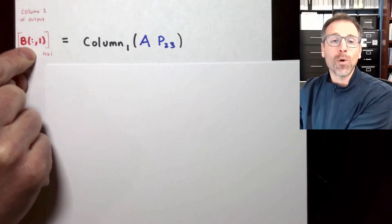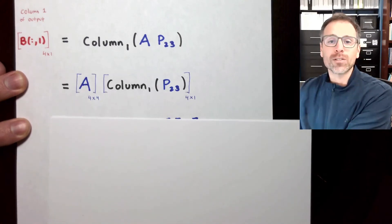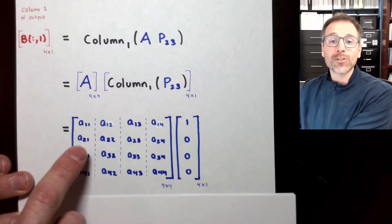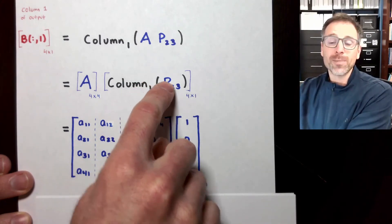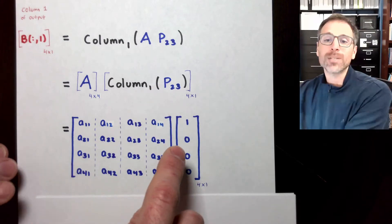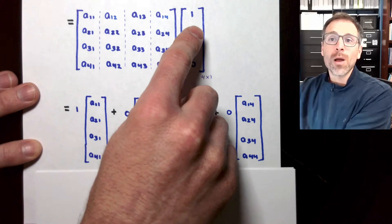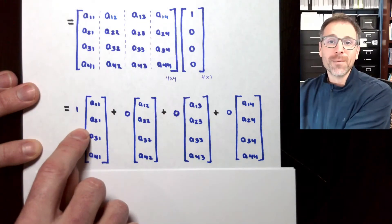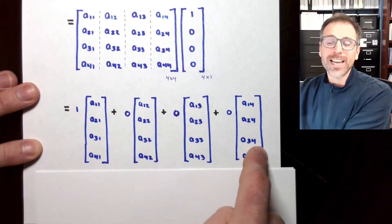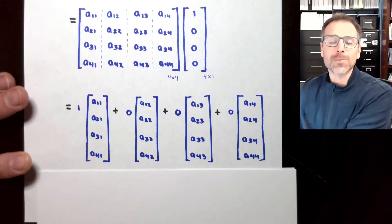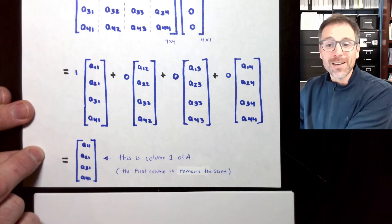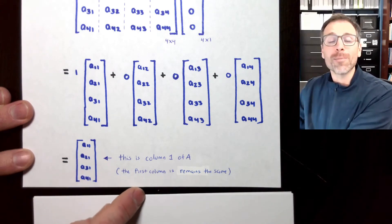Let's calculate column one of our output — column one of A multiplied by the transposition matrix. This is A times the first column of our transposition matrix. The first column of P₂₃ is [1, 0, 0, 0]. Since we're doing right matrix multiplication by columns, we partition A and the transposition matrix into columns. We pair the first entry of our vector with the first column of A, then add the second entry times the second column, third times third, fourth times fourth. Three of those entries are zero, so they disappear, and we pick off one times the first column. The first column of our output is column one of matrix A — it remains the same.